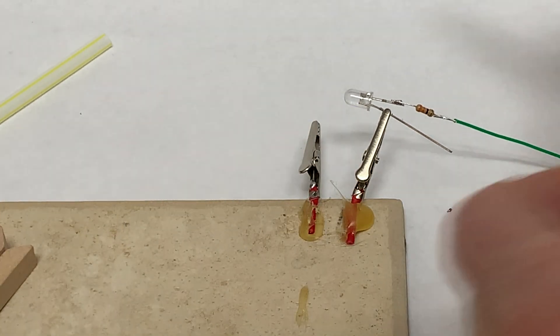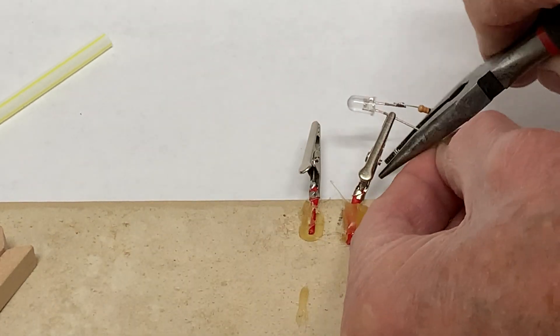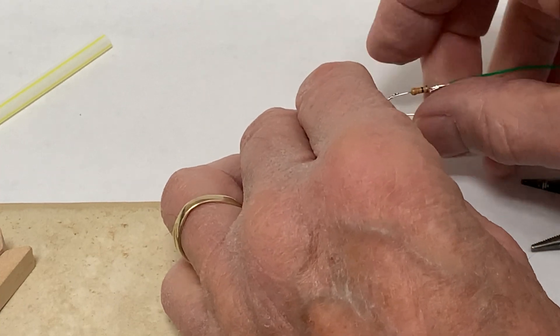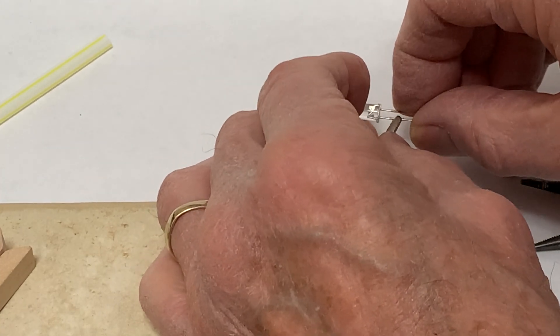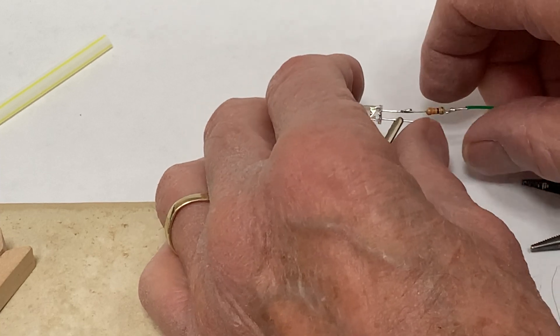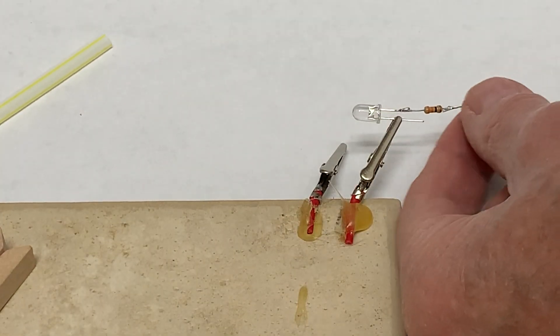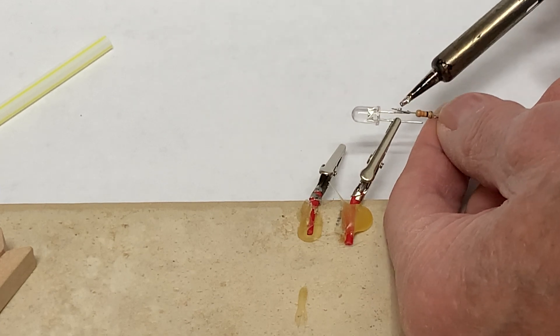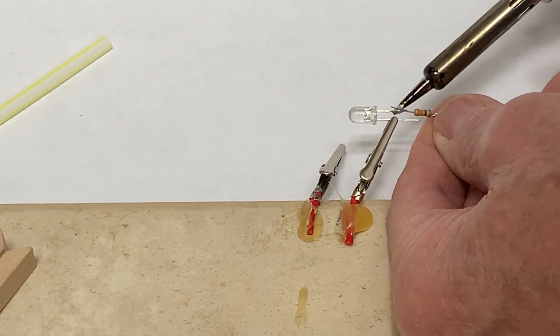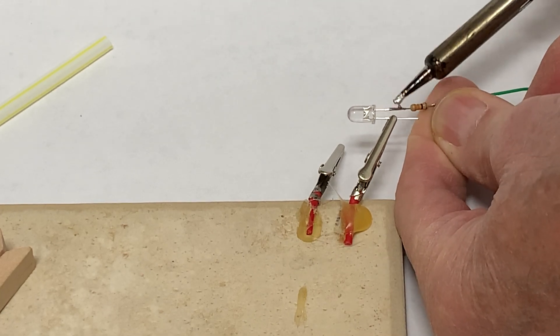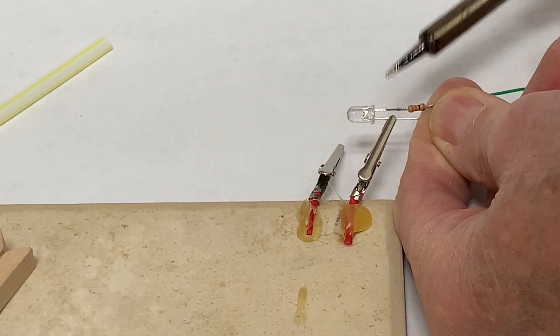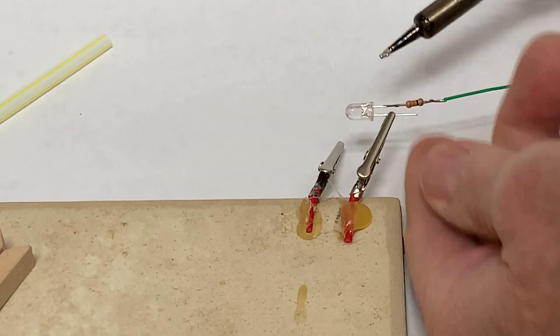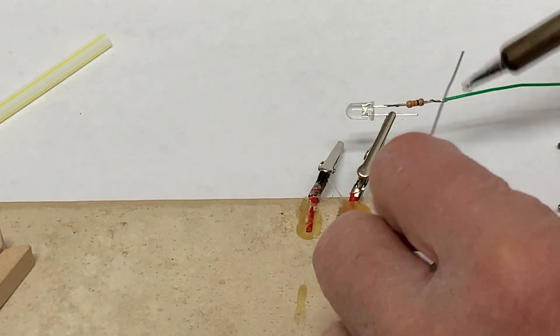Then cut positive lead. And adjust everything so that the resistor body helps to keep these leads separate.